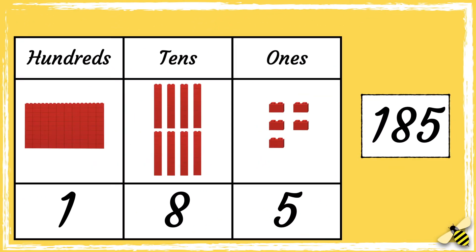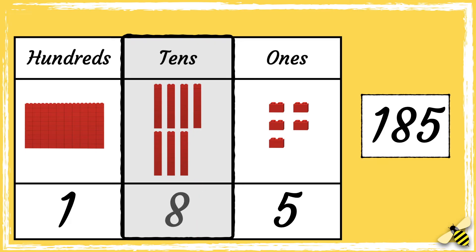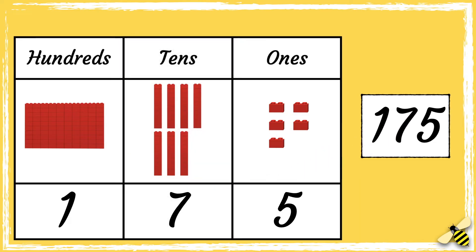Let's have a look at 10 less now. Here is the number 185. When we take away 10 from a number, we need to look at the tens column. So let's take away one 10. Eight tens becomes seven tens. So the new number is 175.